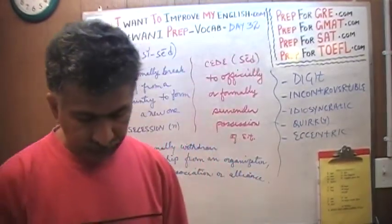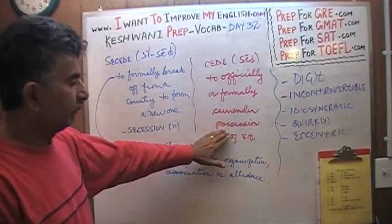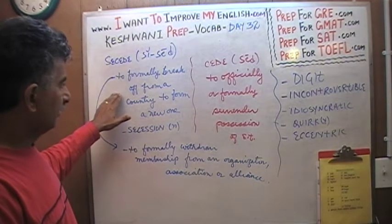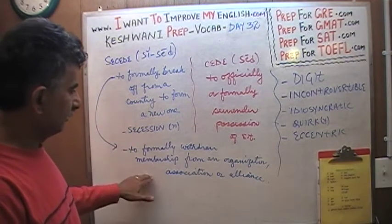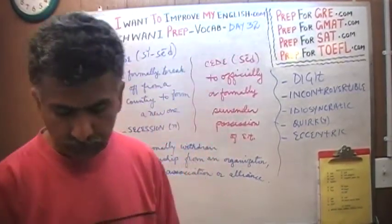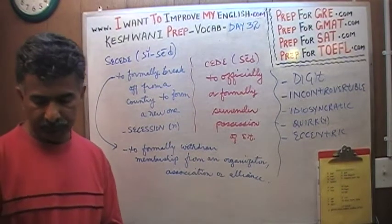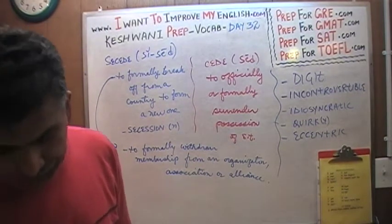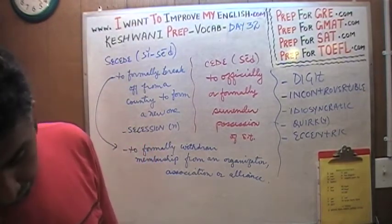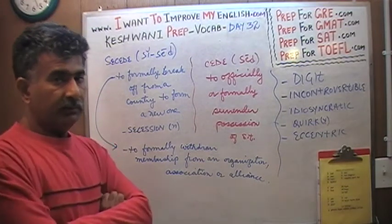They are all related. Cede and secede — don't confuse the two. With cede you are giving up possession of something; with secede you are breaking off your membership or alliance from an organization or country. The other two words we learned were capitulate — which means to give in, to surrender — as opposed to recapitulate, which means to summarize. I hope it wasn't too confusing. I hope you found it helpful. I will see you again tomorrow on day number 33.